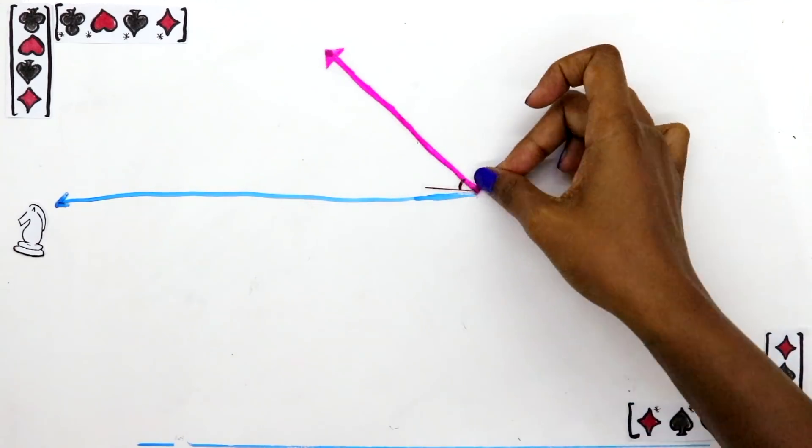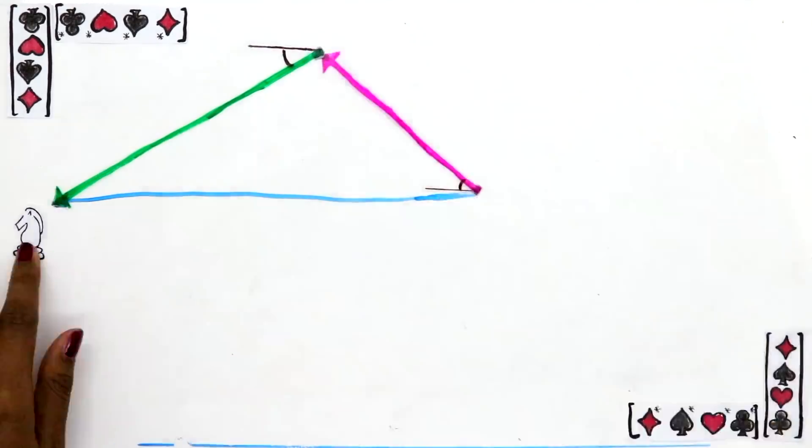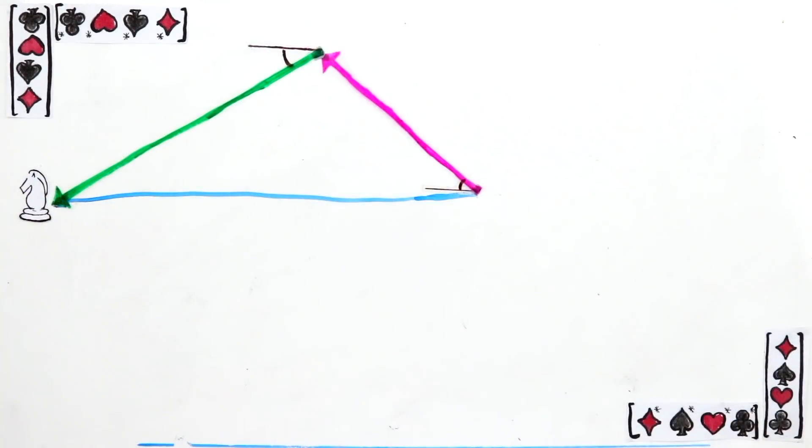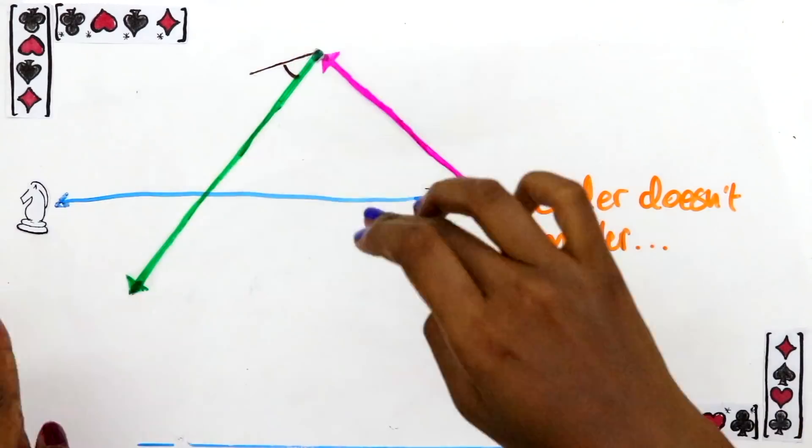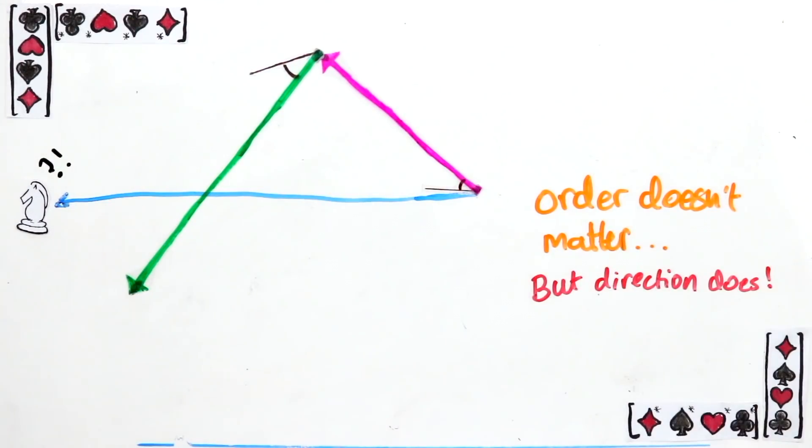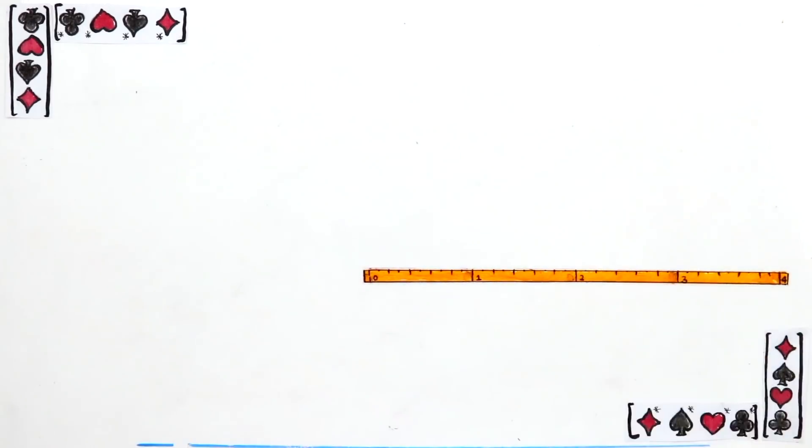By the way, notice if you'd followed this vector first, and then this one, you'd still end up in the same spot, so the order doesn't matter at all when you're adding vectors. But something that does matter is the direction.